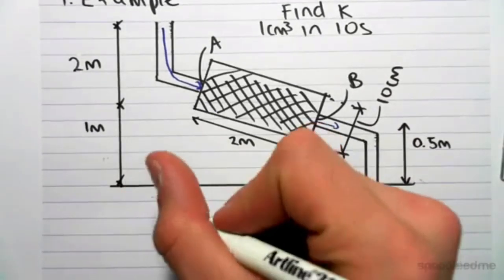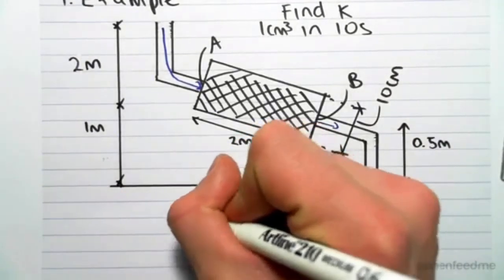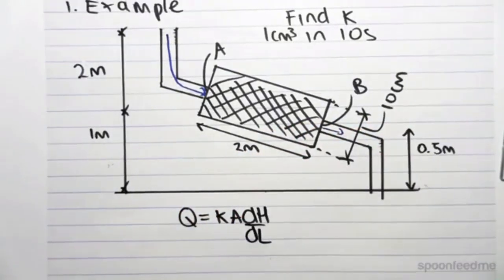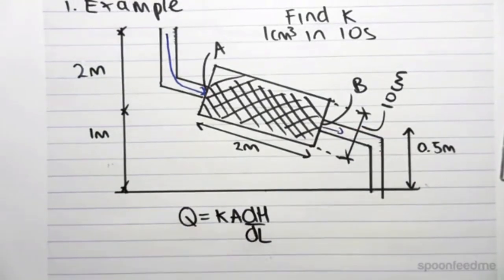So we know Darcy's law stated that q equals k, a, dh on dl. So we're just going to find q, a, dh, and dl, and then we can rearrange this equation to get k.